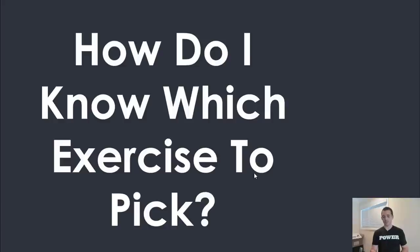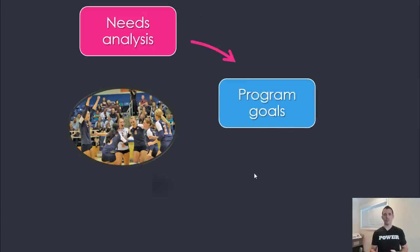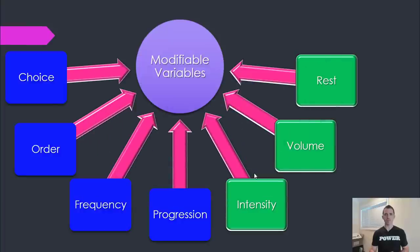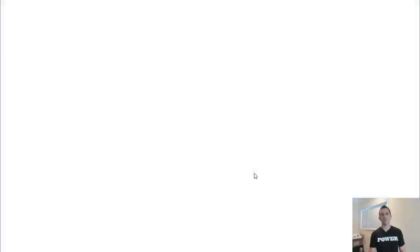So how do I know which exact exercise to pick? I have an exercise selection video up — go check those out. Basically: you did the needs analysis, decided on the program design, and now you're adjusting the modifiable variables — choice, order, frequency, and things like that. There are seven modifiable variables: choice, order, frequency, progression, intensity, volume, and rest. Some people say six, some say eight — it doesn't matter. It's just helping you think of them conceptually.